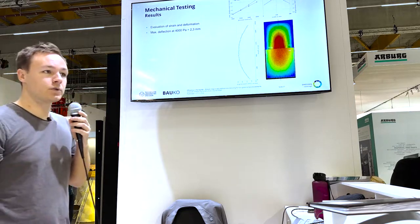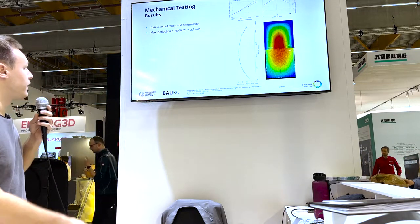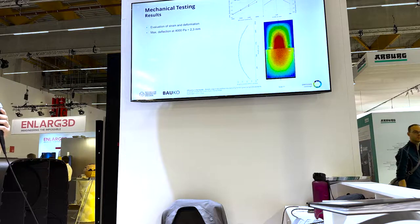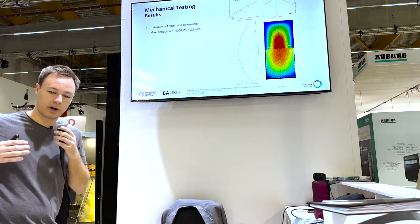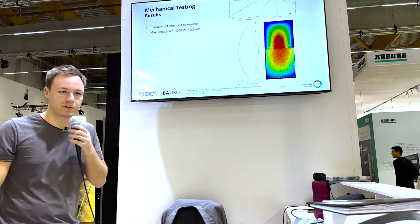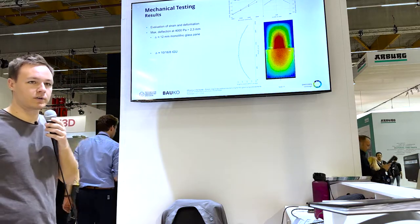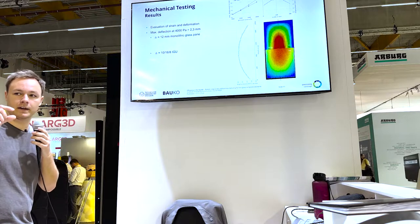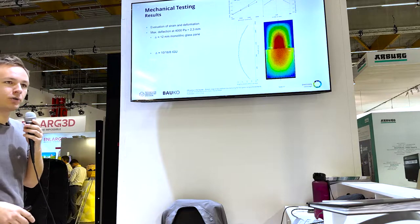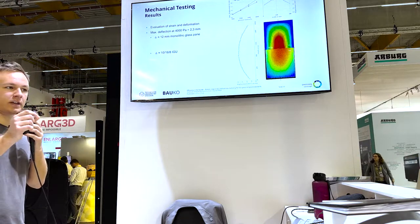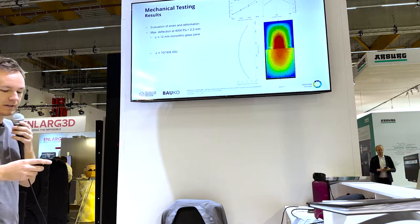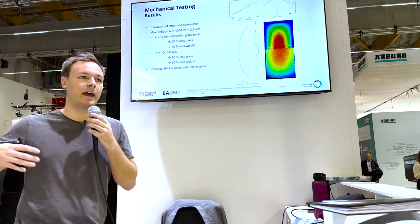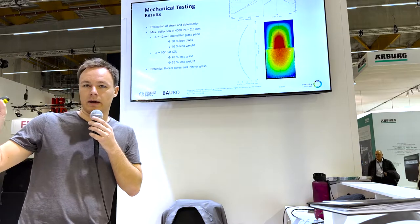We can measure all deformation from wind load and compare it with the finite element method. There are some slight deviations, but we are still working on the finite element model. What is very important is that at a very high pressure of 4000 Pascals — which is quite a lot — we only see a deformation of 2.3 mm. This compares to more traditional glass sizes: it achieves approximately the same stiffness as a 12 mm thick monolithic glass pane, or more relevantly for facades, an IGU with a 10 mm glass sheet, 60 mm air gap, and 8 mm glass. That saves a lot of glass — up to 70% in this case — and the potential is much higher when we use bigger or taller cores and thinner glass.